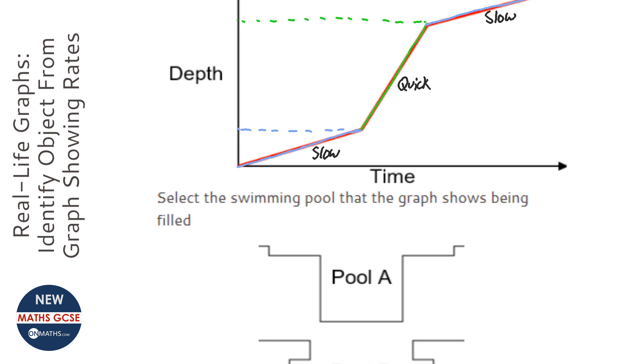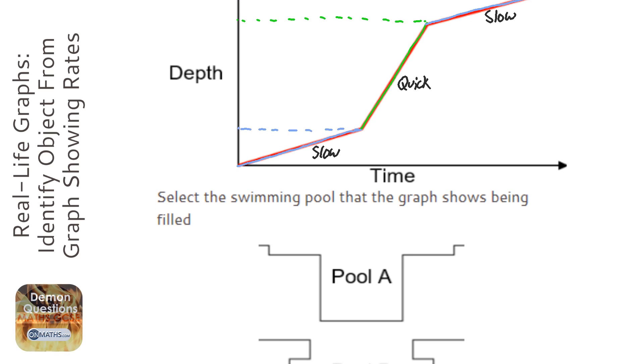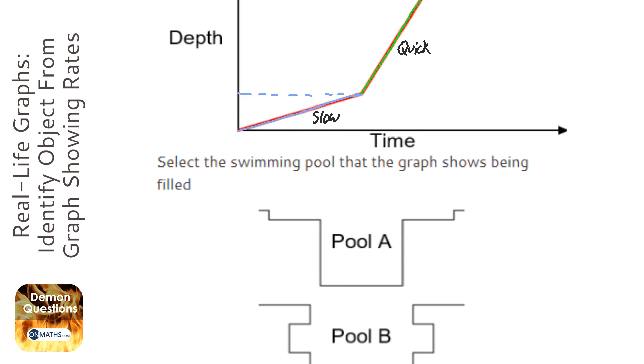So looking at these pools, we need one that goes slow, then quick, then slow. Now if you have a look at Pool A, Pool A will fill up quite quickly and then just end really slowly because it's so wide. It will end slowly - that's not what we're looking for.